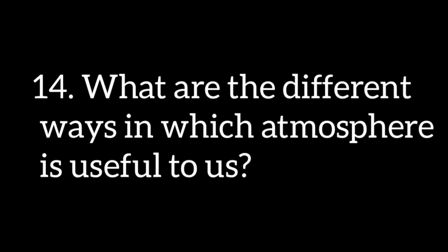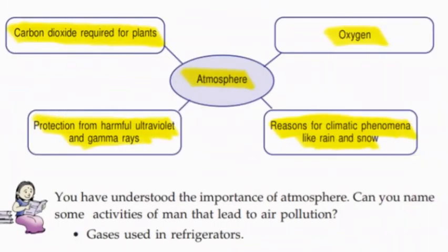What are the different ways by which the atmosphere is useful to us? The atmosphere protects us from ultraviolet and gamma rays. Carbon dioxide in the atmosphere is required for plants.